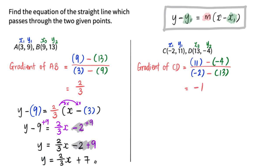Now I just have to substitute in. I will get y minus—I'm going to use point C for this substitution—so I will have 11 equals to gradient, which is negative 1, multiplied by x minus negative 2.